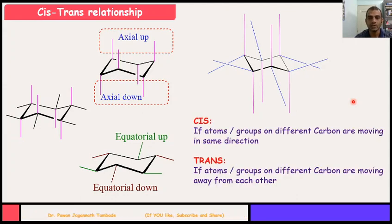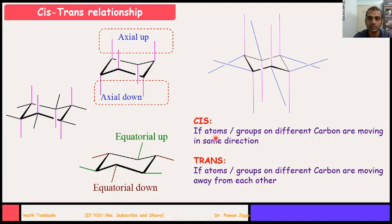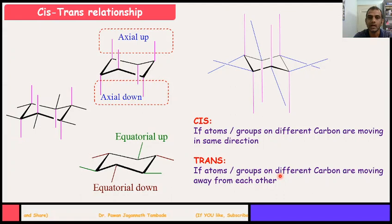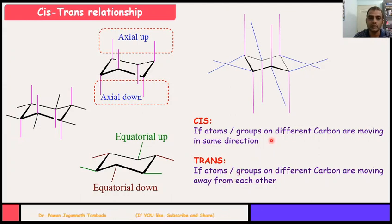So how to assign cis-trans relationship? If atoms or groups on different carbons are moving in the same direction — upward or downward — then such groups are having a cis relationship with each other. However, if atoms or groups on different carbon atoms of the cyclohexane ring are moving away from each other in different directions — one going upward and the other going downward — then such atoms or groups have a trans relationship with each other.